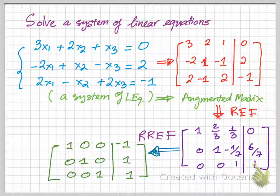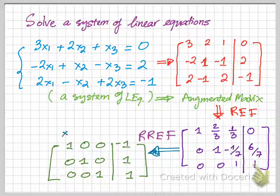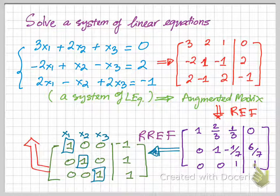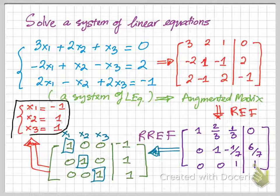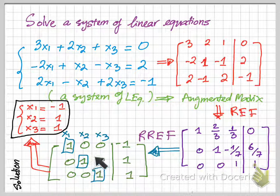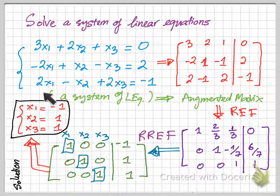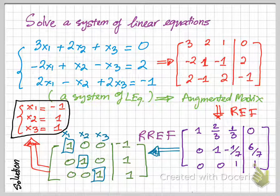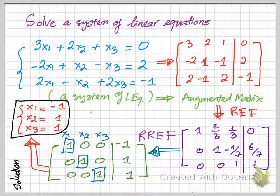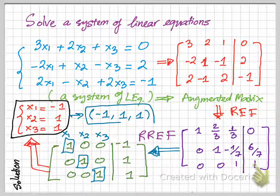And once we have this reduced row echelon form, we can actually read the solutions of this matrix. So the solutions of this matrix is going to be x1 equals negative 1, x2 equals 1, and then x3 equals 1. So we have the solution of this system here. But if you want to write the solution of a system of linear equations in a solution set form, it should be in this form.